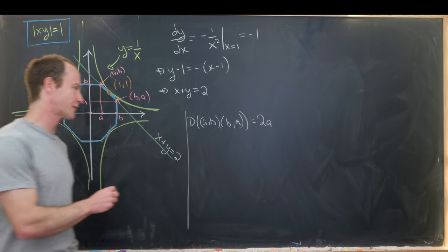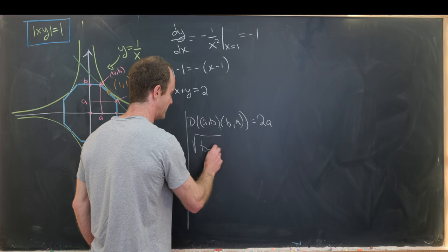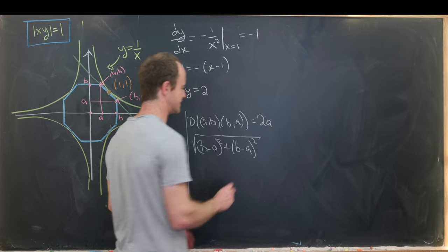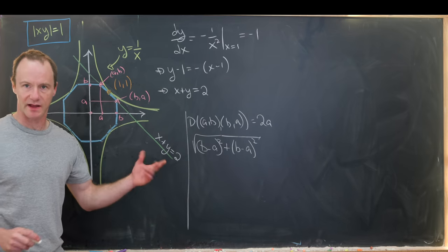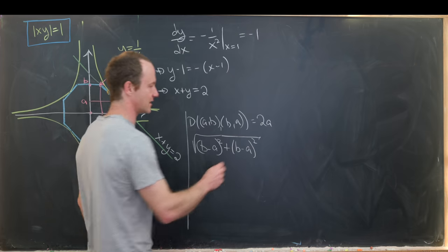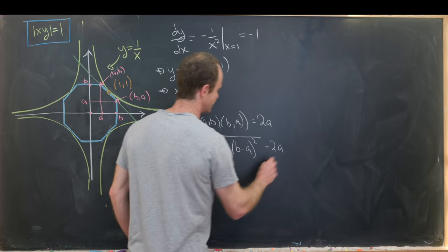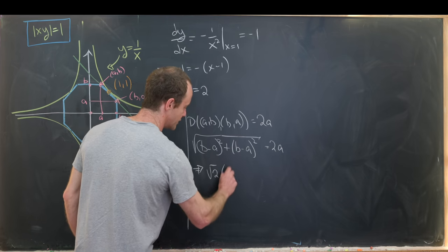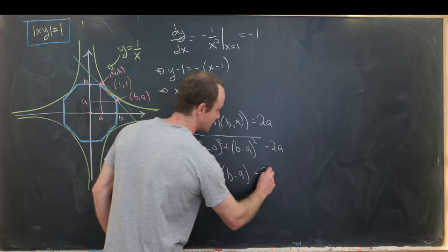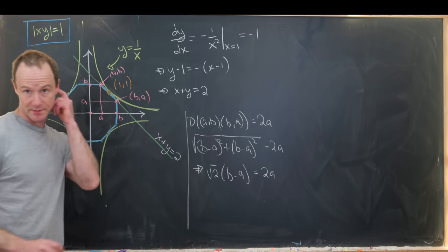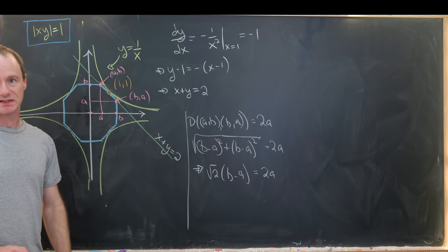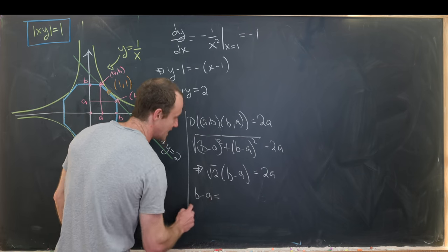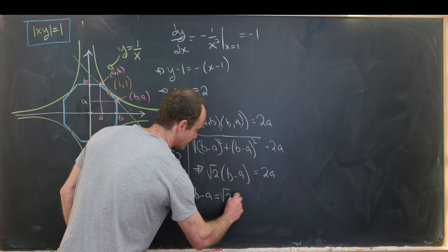So we need the distance between point ab and point ba to be equal to twice a. Now let's use the distance formula. That gives us the square root of b minus a squared plus b minus a squared where I've used the fact that since I'm squaring that I can flip as needed because now I have the same thing in there is equal to 2 times a. But now putting that all together we see that the square root of 2 times b minus a is equal to 2 times a. That's because we get 2 times b minus a squared and then we take the square root of the whole thing. So that means we get b minus a equals 2 over root 2 but that's just root 2a.